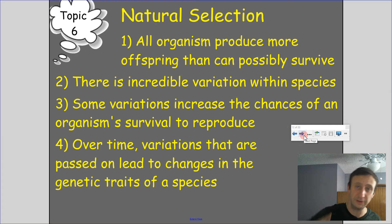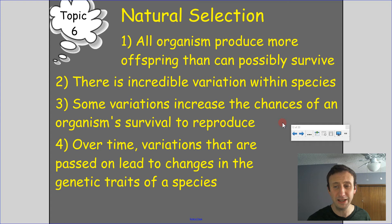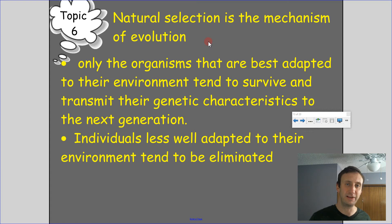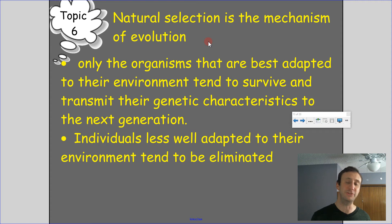So again — four points: all organisms produce more offspring than could possibly survive; there's incredible variation within that offspring; some variations help it survive and reproduce; and over time those variations lead to changes in the genetic traits of the species. Natural selection is the mechanism by which evolution takes place.